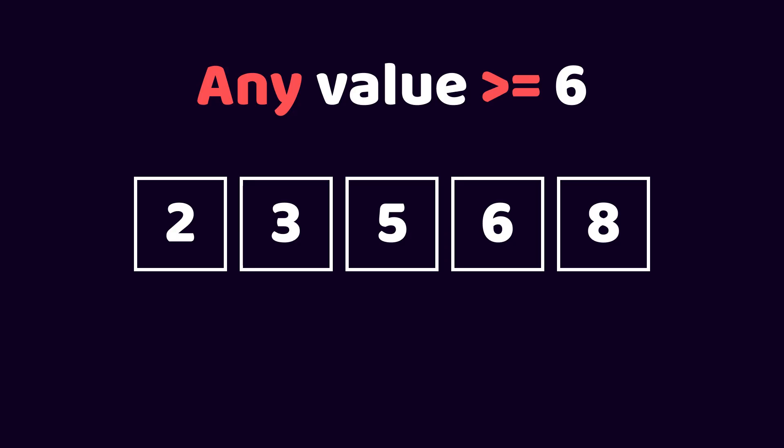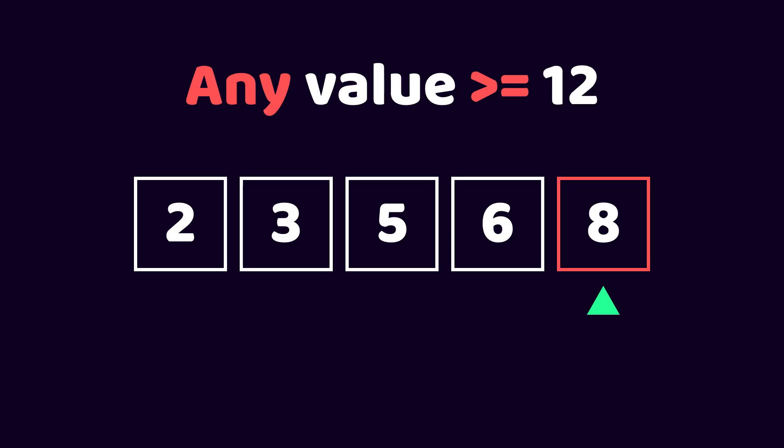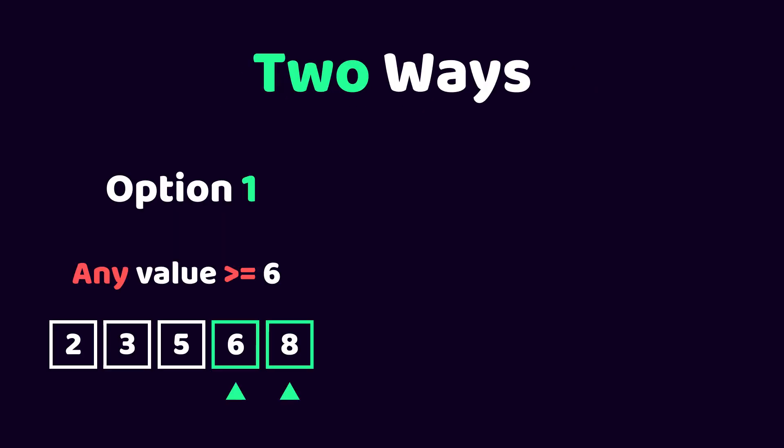If we have a sorted array and we want to get the index that has a value that is greater or equal to some other value, we only have to check the last index. Because if the value of the last index is larger or equal to the value that we're looking for, then we can use that index. And if it's not, we know that there is no number in the entire array that satisfies our condition. So we're done. For this option, we didn't need anything that looked like binary search.